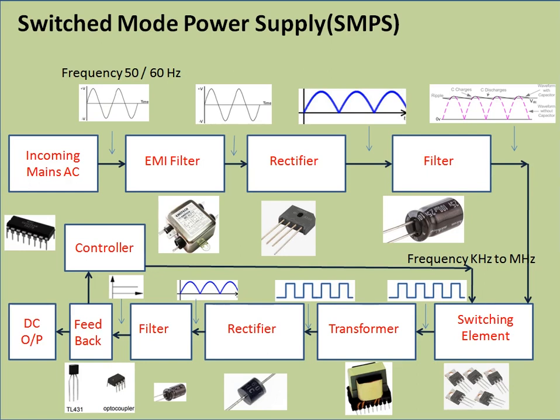In the typical block diagram of a switched mode power supply, the incoming mains is fed to an EMI filter. This is a requirement for SMPS because the switching elements operate at a very high frequency, causing conductive and radiative interference. EMI filters are required to eliminate conductive interference, and shielding is required to eliminate radiated interference. The filtered signal is then fed to a rectifier where it is converted to DC, and unwanted ripple is removed by filters.